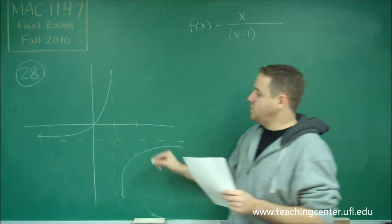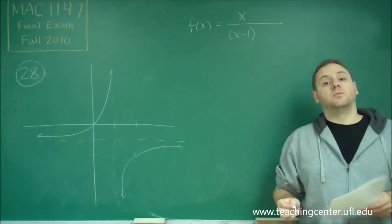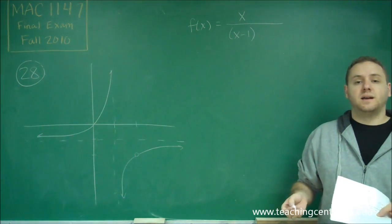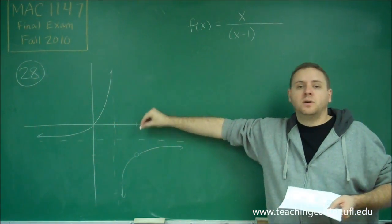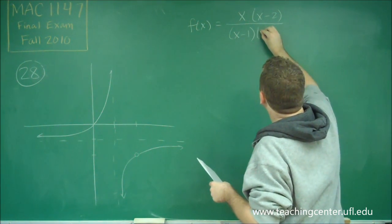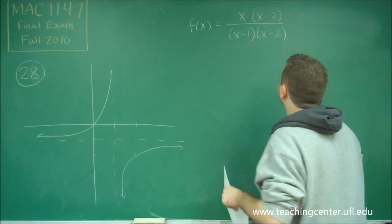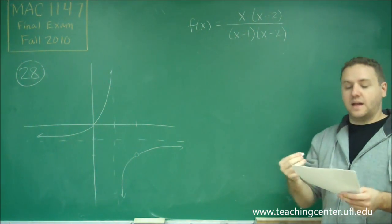And since we have a hole when x equals 2, that means we must have a factor that cancels out. Remember that a hole is always something that cancels out. So we need a zero of x equals 2 that will cancel out. So that tells us that we must have x minus 2 and x minus 2, because those would cancel out, but we're going to write it in its full form.